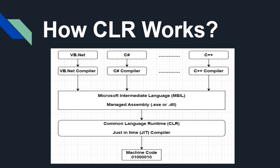Now let's understand the working of CLR. In .NET, there are many languages like VB.NET, C#, C++, and more, each with its own compiler. The compiled C# code is converted into an intermediate language (MSIL), making the language platform independent. This is where Common Language Specifications come into picture. The MSIL generates a managed assembly code, which moves to the CLR. CLR then converts the MSIL into machine code using the just-in-time compiler.